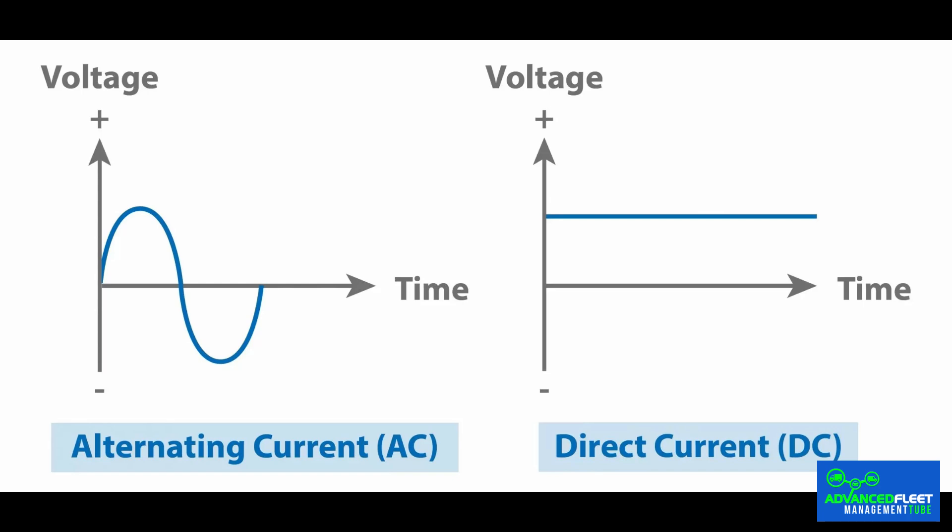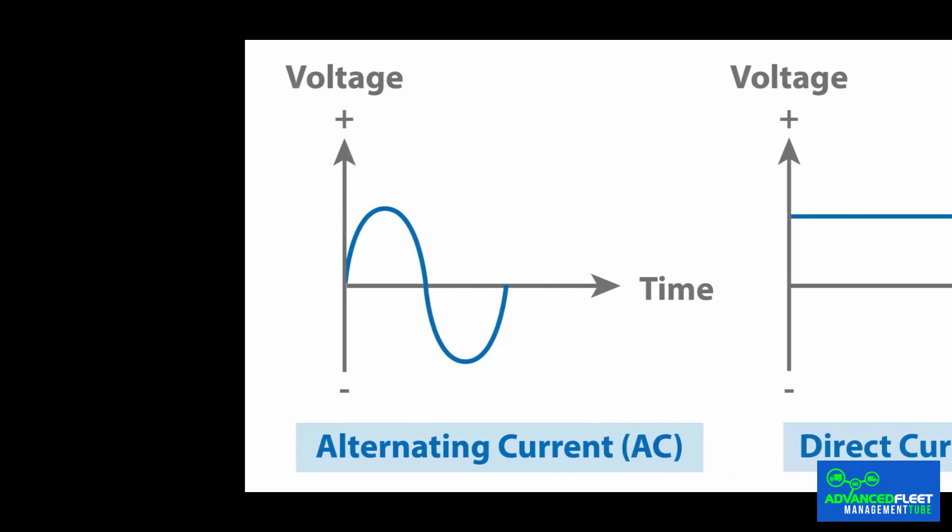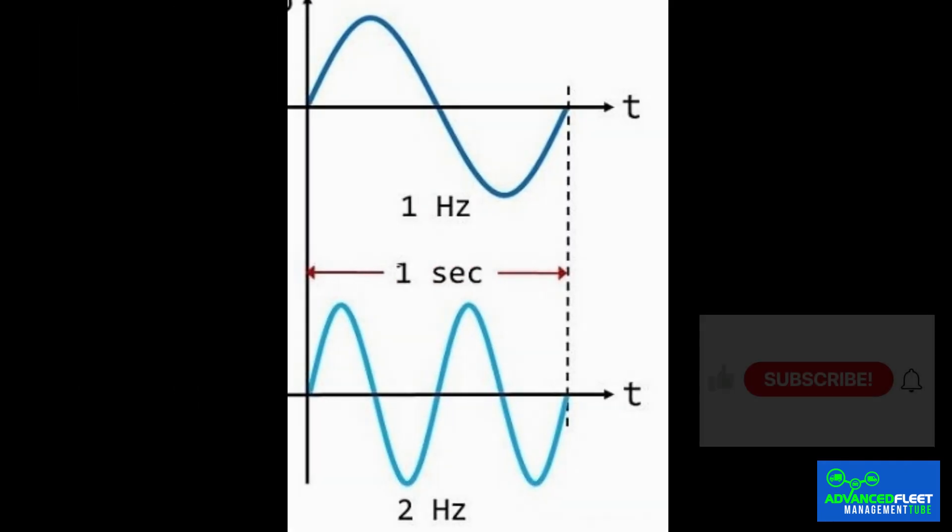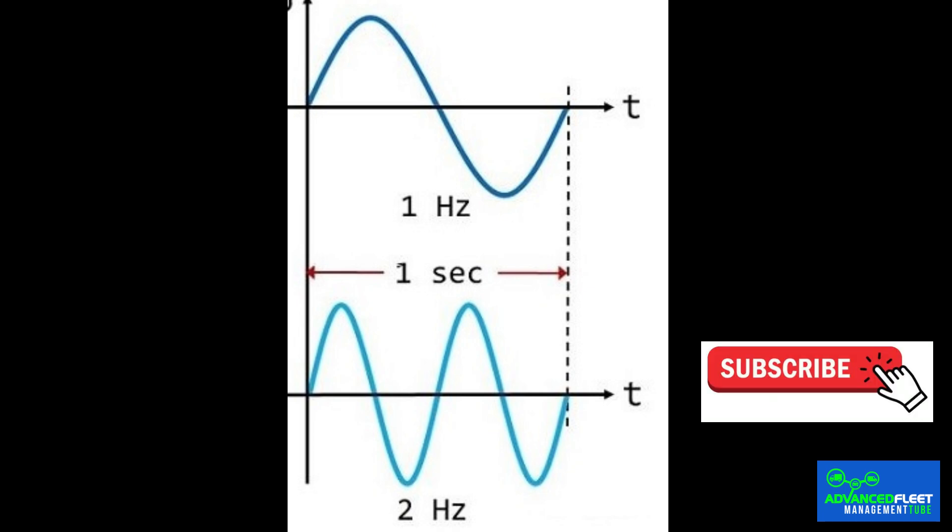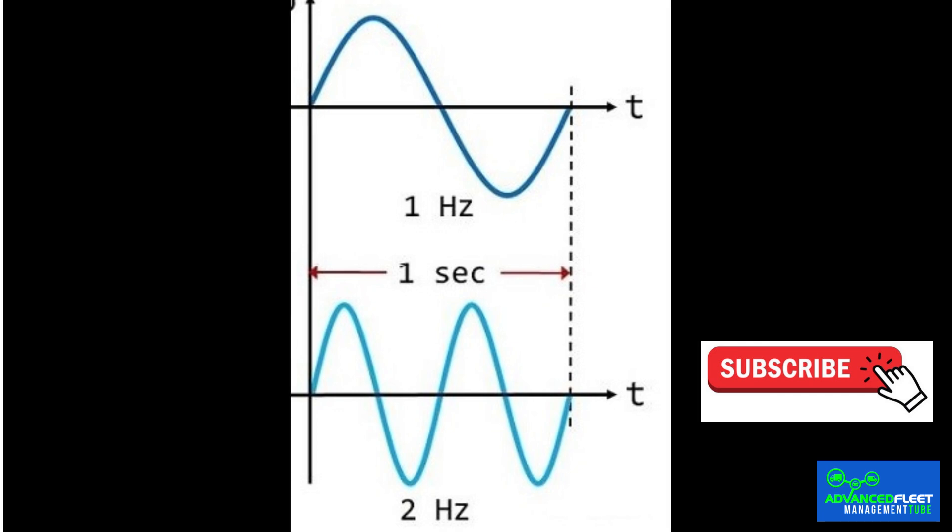DC has a defined and constant polarity, while AC can alternate its polarity over time. This variation is called frequency and is measured in Hertz. Frequency is the speed at which the voltage changes from positive to negative, that is the number of times the sine wave is completed. A frequency of 2 Hz indicates that the sine wave has been repeated twice in one second.